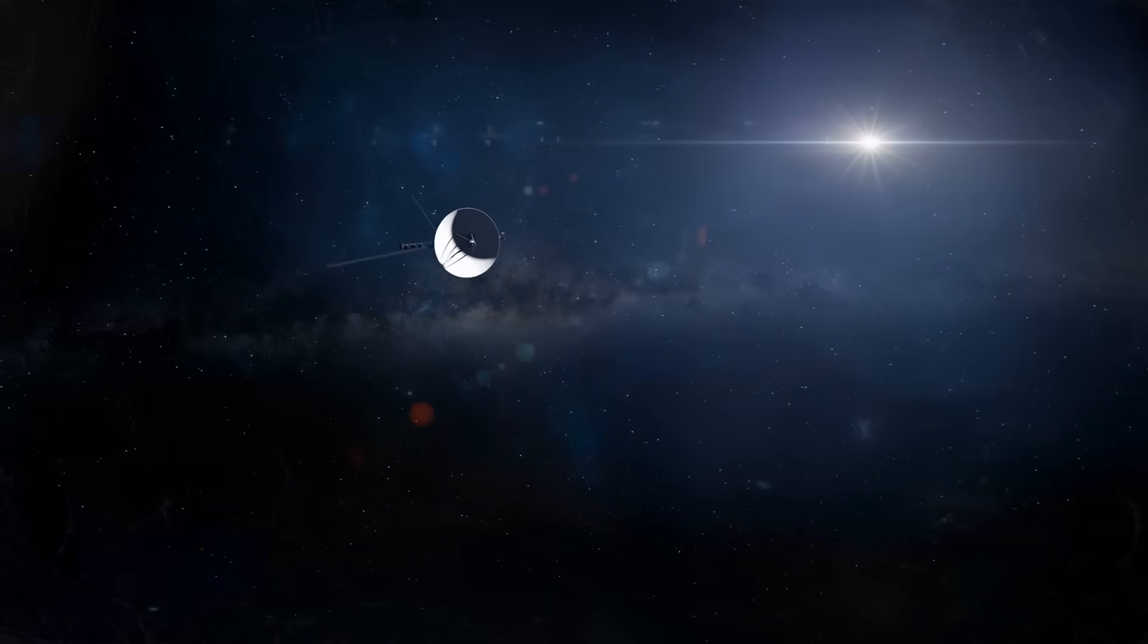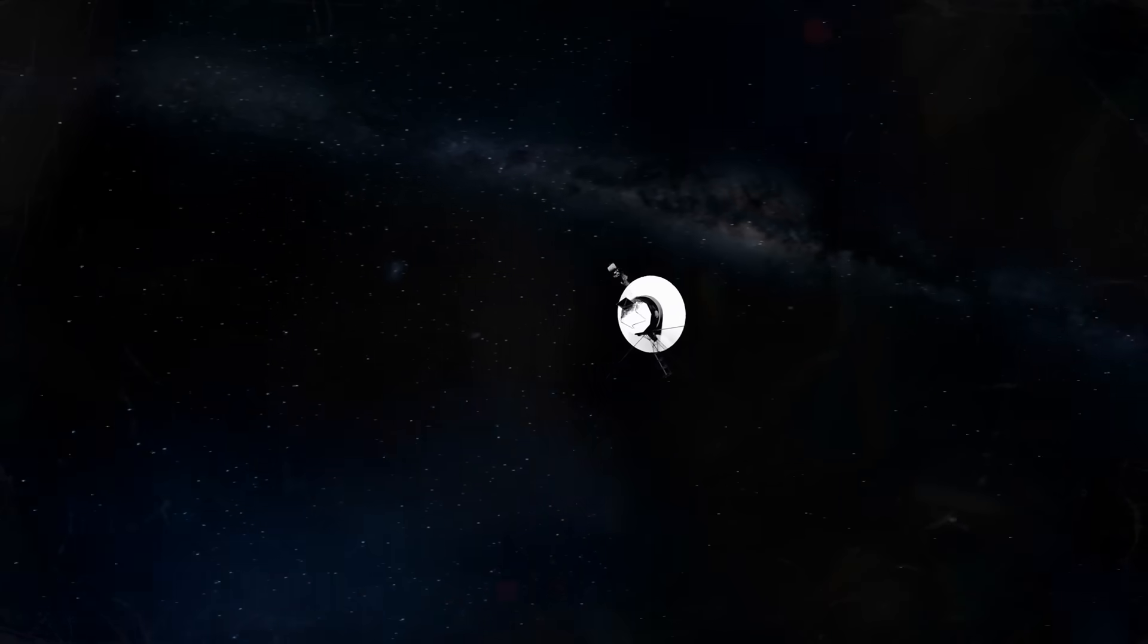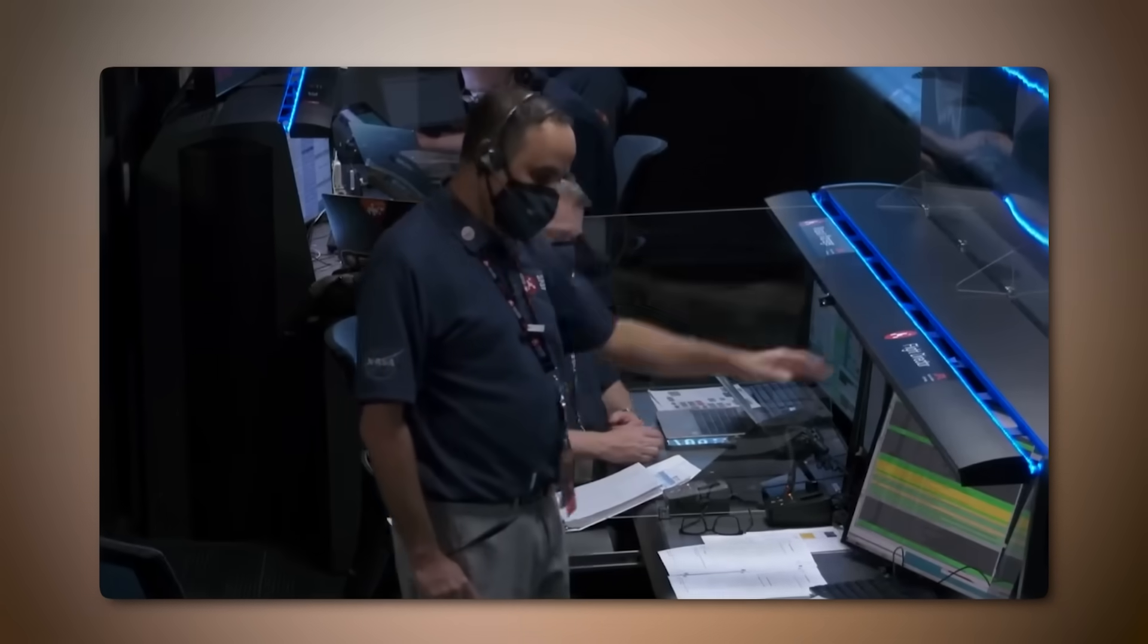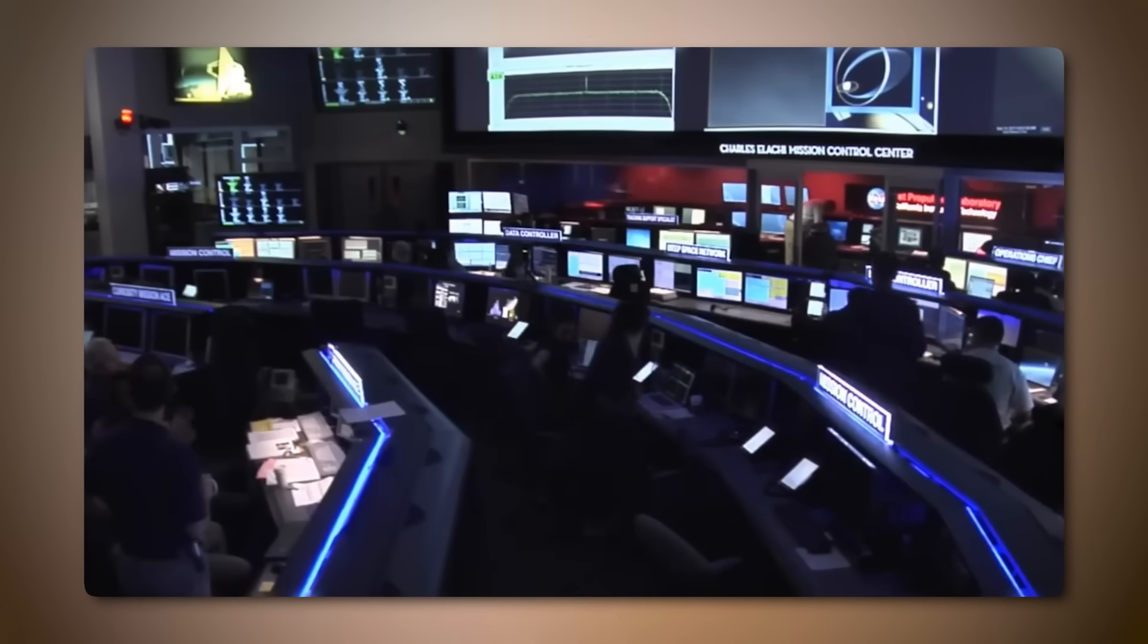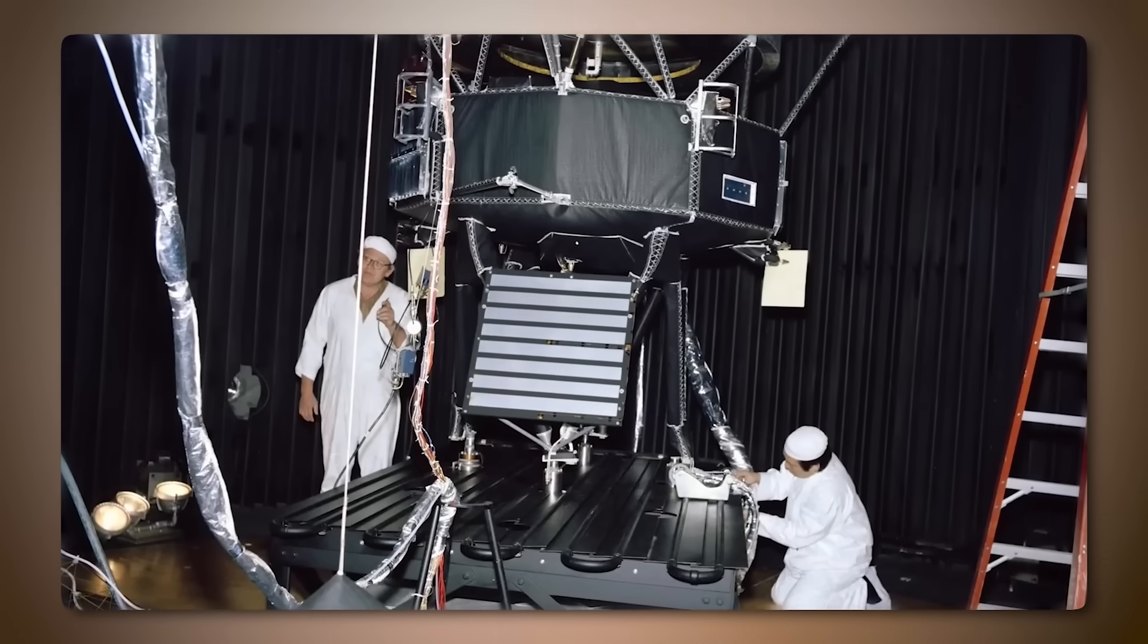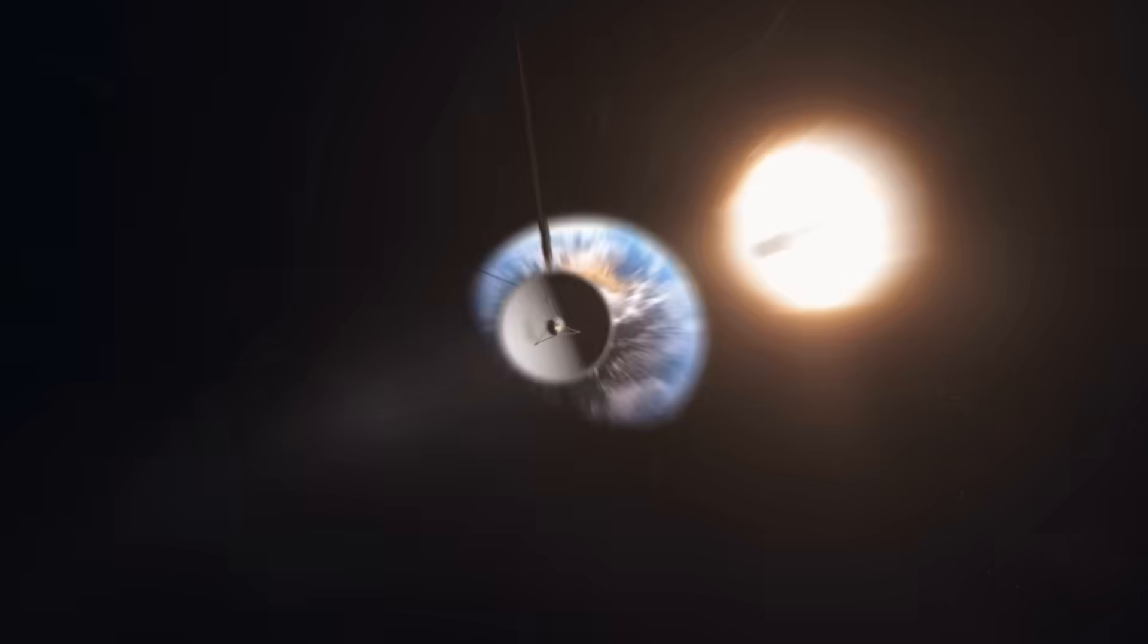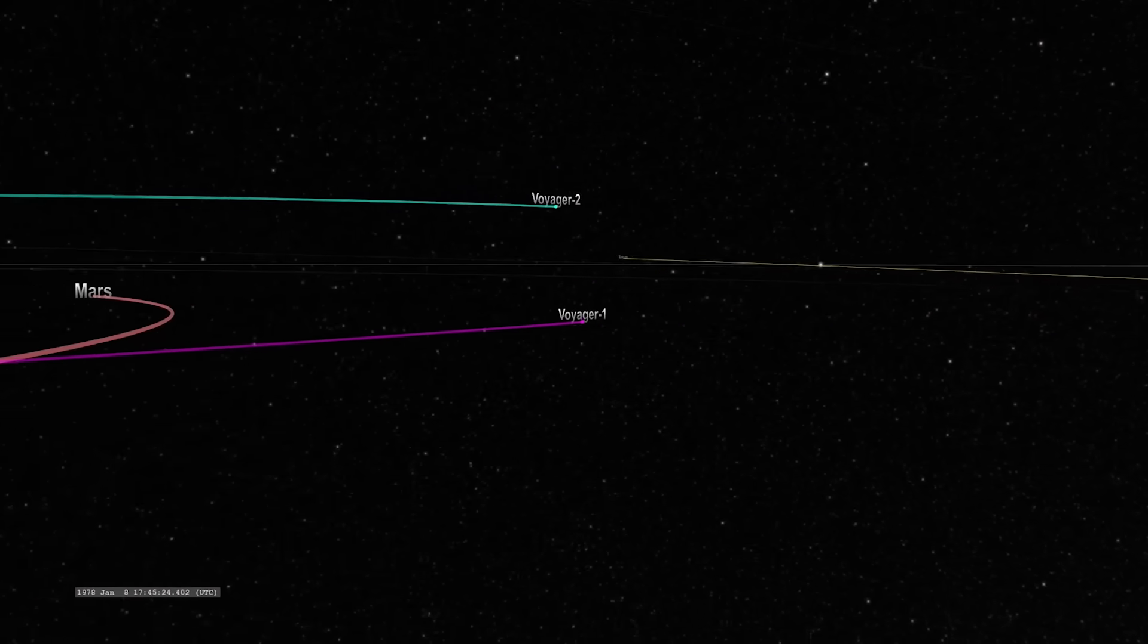Voyager 2, the only probe to have visited Uranus and Neptune, revealed some of the most bizarre weather patterns in the solar system. One hypothesis based on Voyager's data is that methane deep within the atmospheres of Uranus and Neptune could undergo extreme pressure and temperature conditions, breaking down and forming diamonds that rain through the interior of these icy giants. This exotic phenomenon of diamond rain remains speculative, but it is one of the leading explanations for the unexpected atmospheric behaviors Voyager observed.